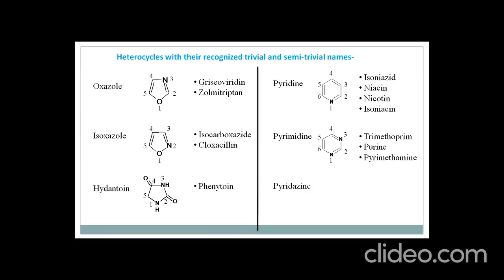The next one is pyridazine. Here is the structure — the 6-membered ring has 2 nitrogens, but their positions are at 1 and 2. This is the difference between pyrimidine and pyridazine: in pyridazine the nitrogens are at the 1st and 2nd positions, whereas in pyrimidine the nitrogens are at the 1,3 positions. An example of a drug is sulfamethoxidiazine.